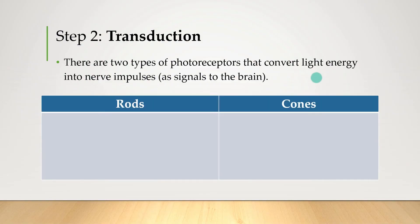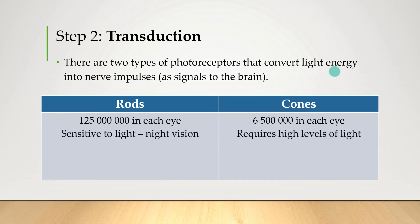Why do we have two types, rods and cones? Well, they play different roles. For starters, we have a lot more rods than cones in each eye. Rods are also very sensitive to light, which makes them very good at night vision. We rely on them quite a lot when light is very low. Our cones, however, require high levels of light before they can be activated.